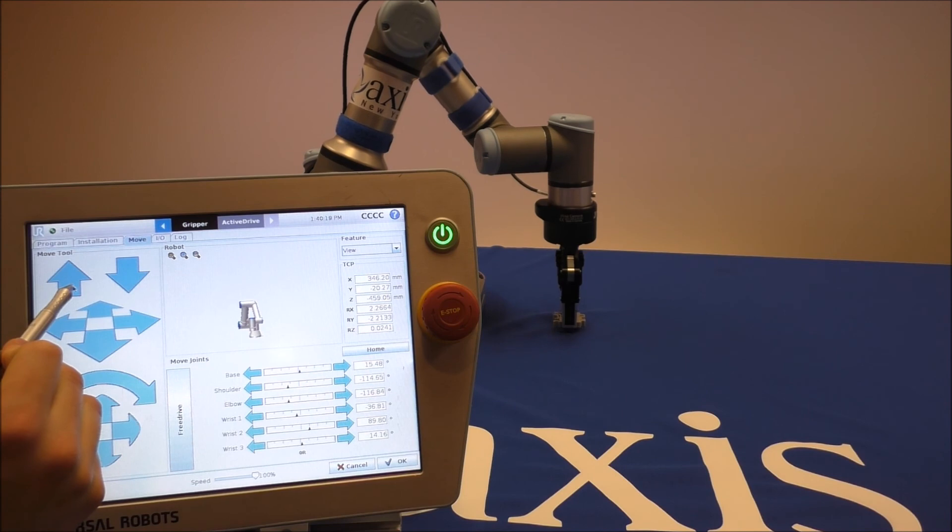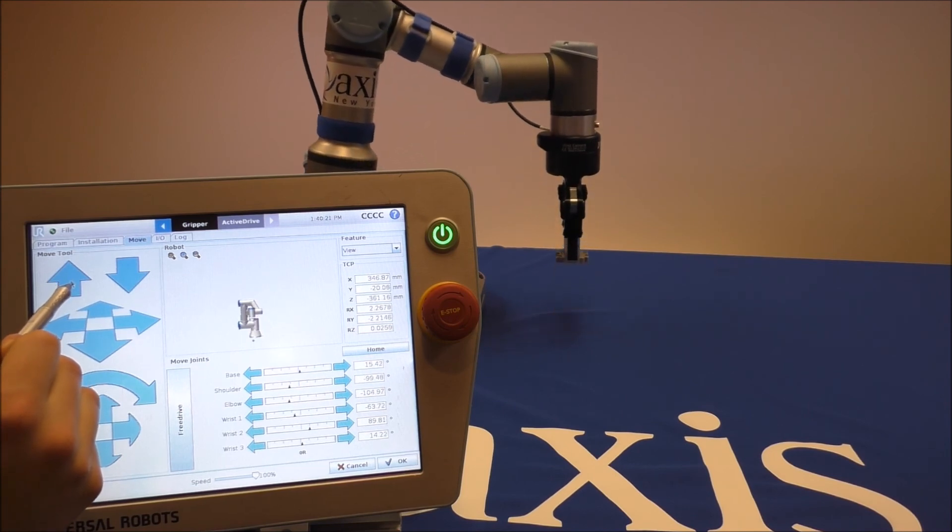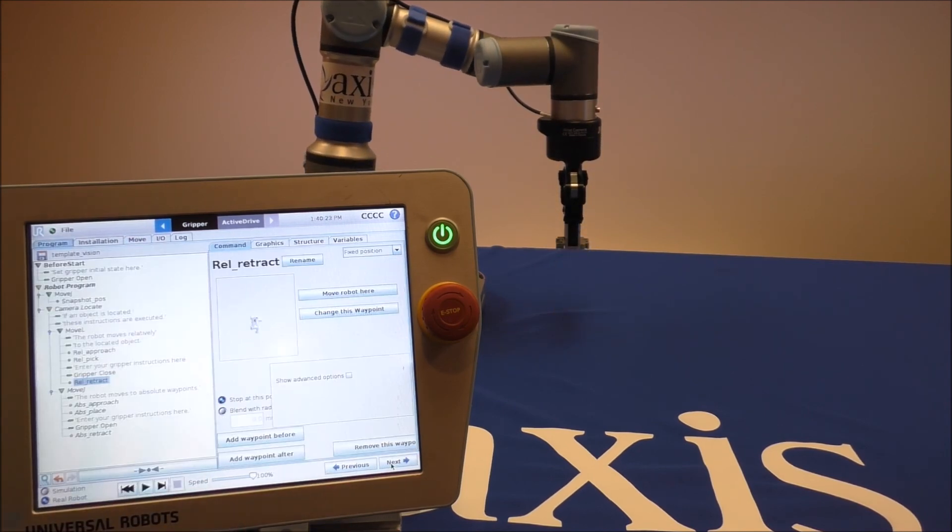I'm going to create an exit position. And now I'm going to create an absolute place position. This place position no longer has to be relative to the feature point because this is where you would place to the next sequence in your application.